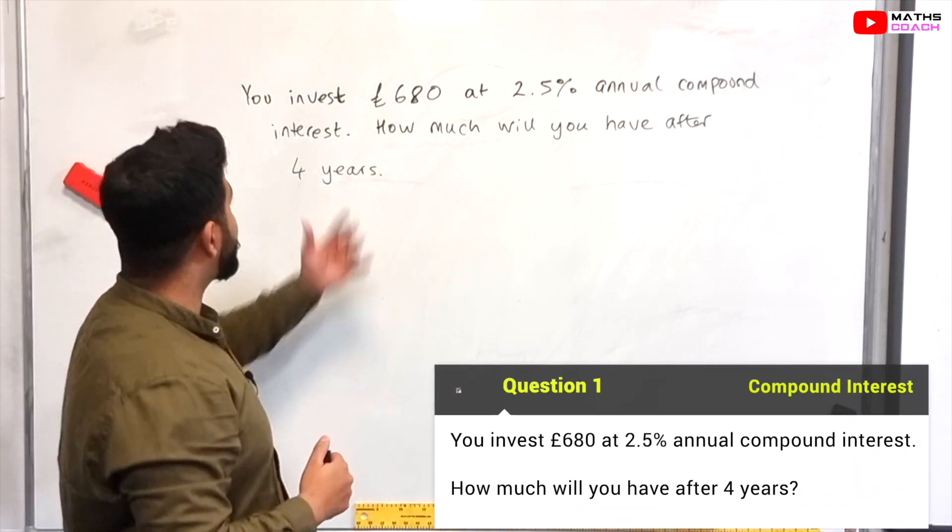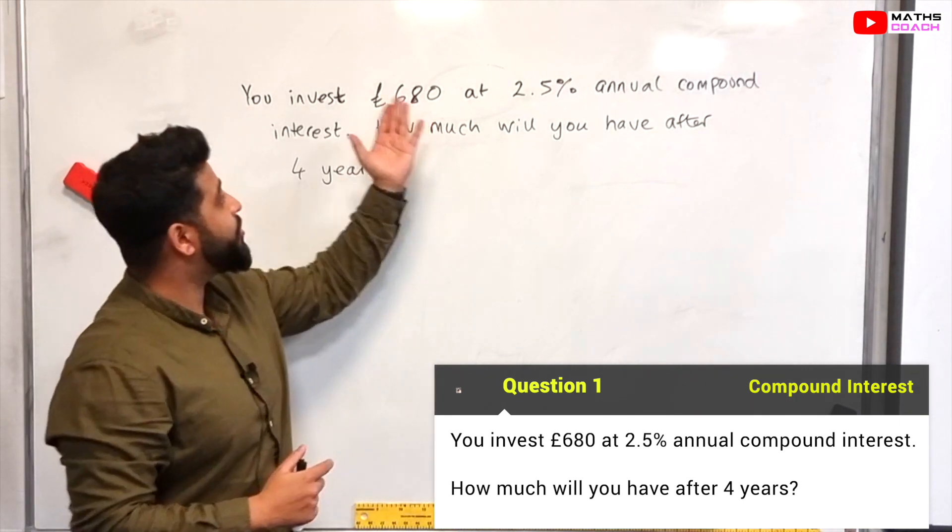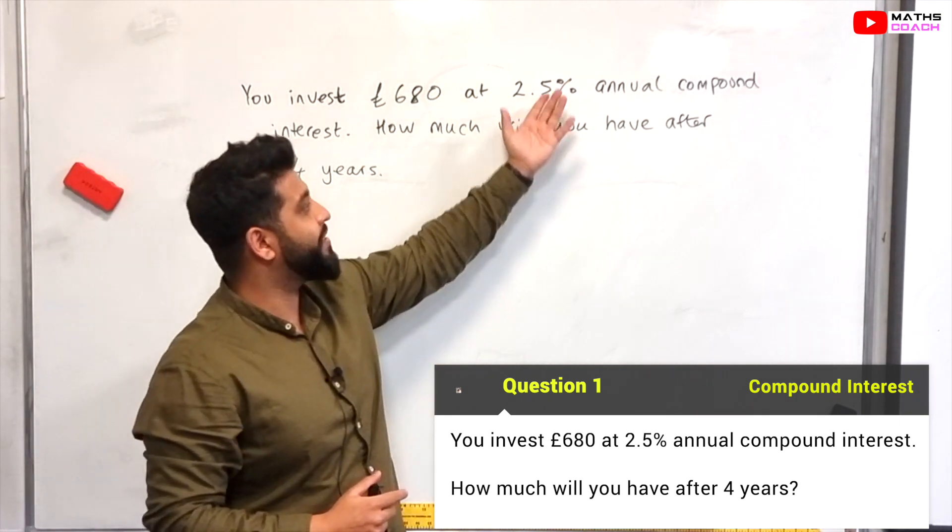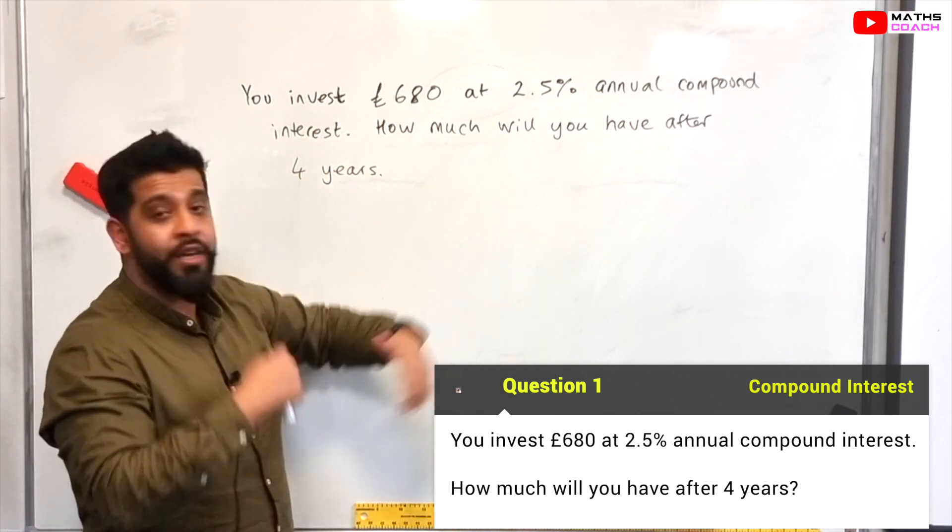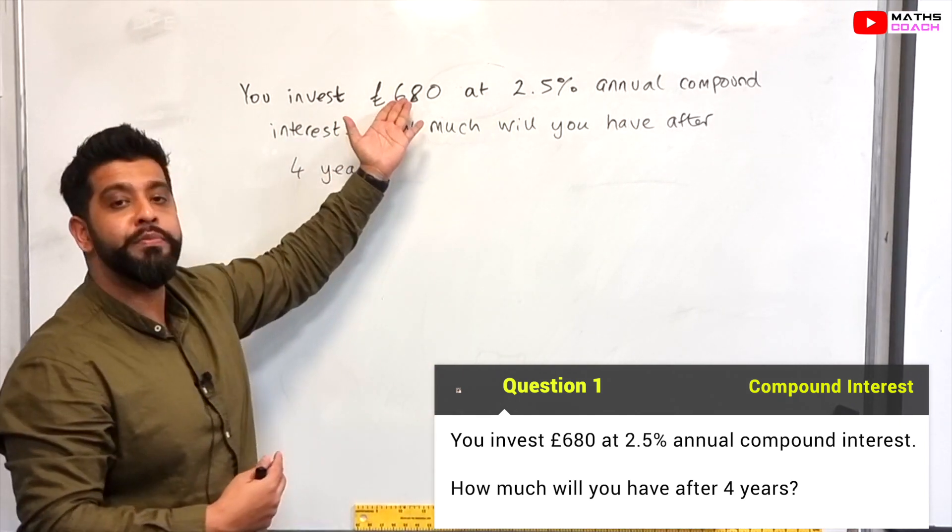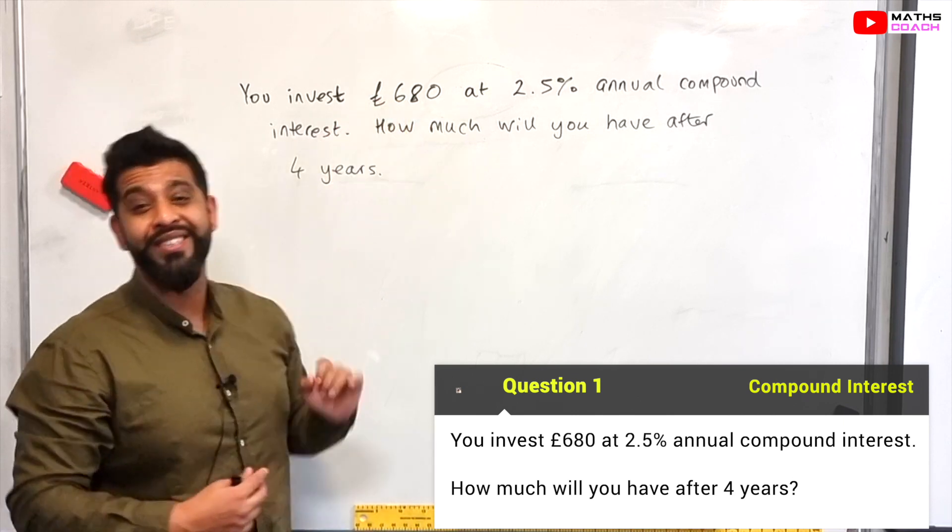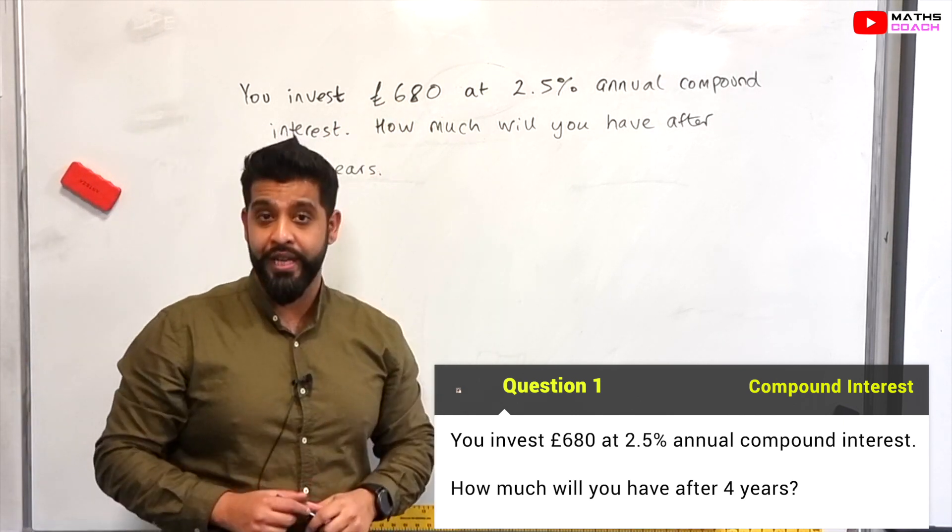Let's have a look at our first question. You invest £680 at 2.5% annual compound interest, so you're paid 2.5% compound interest on your principal amount, your original amount which is 680. How much will you have after four years?